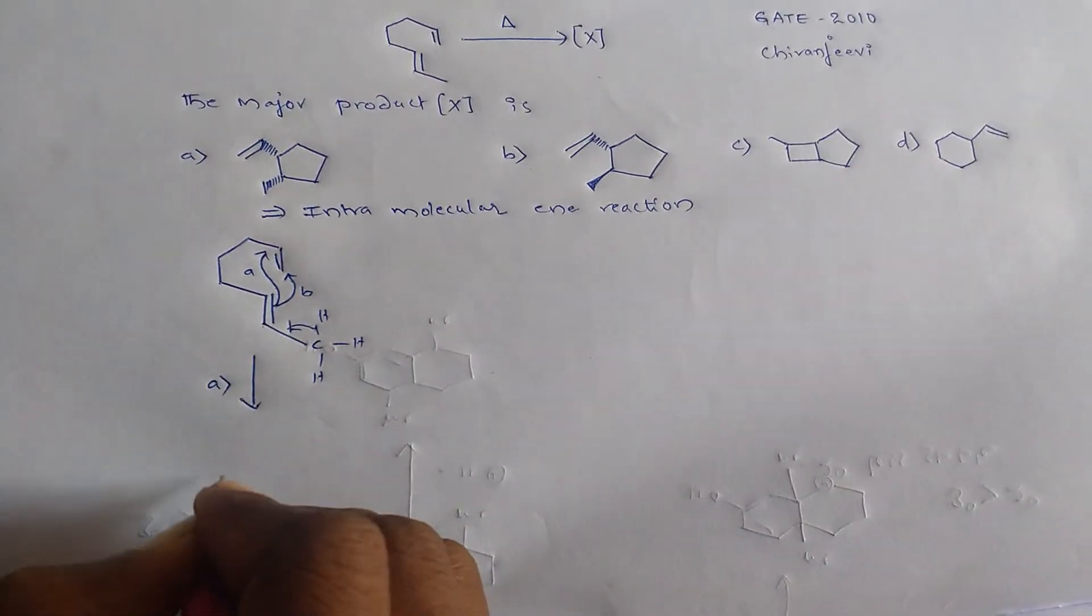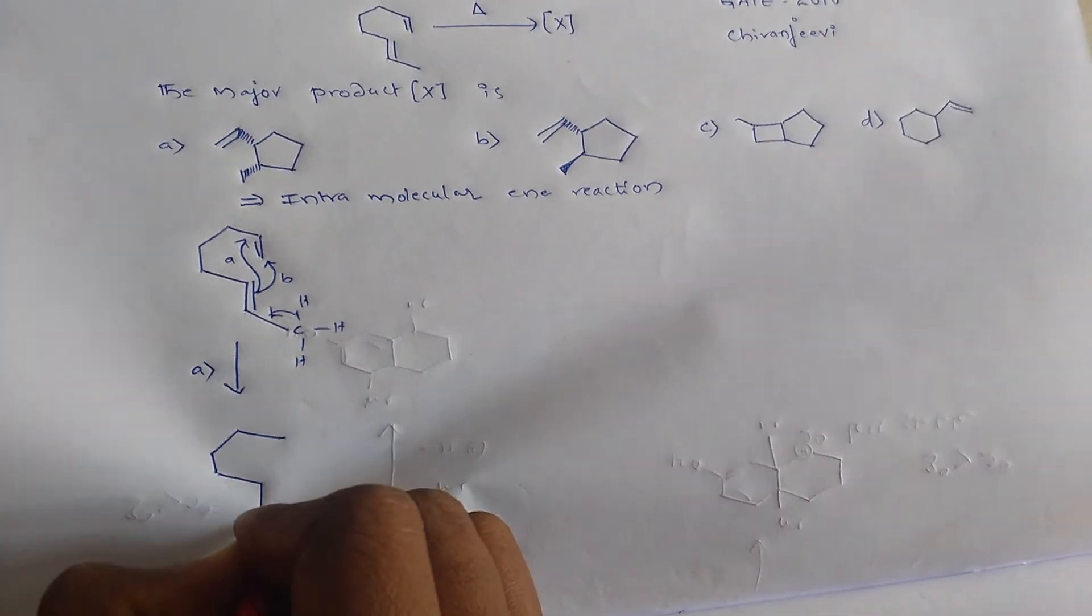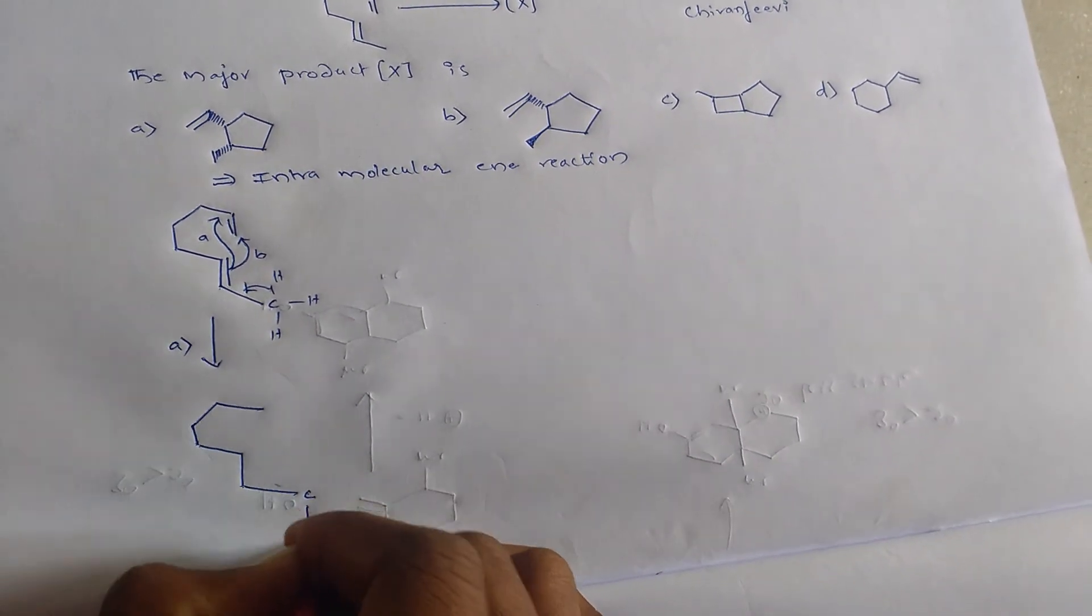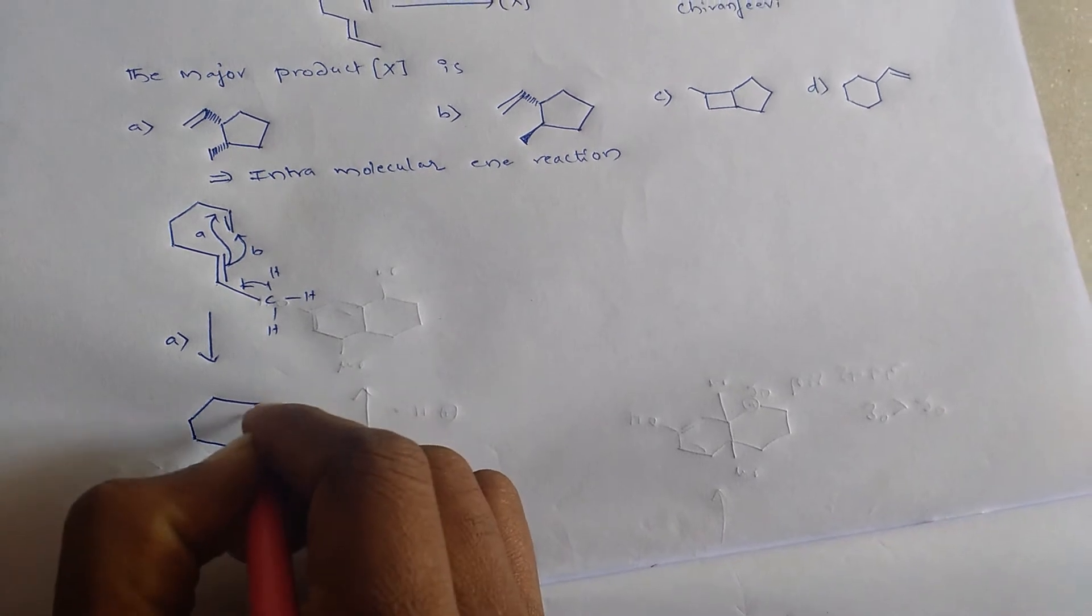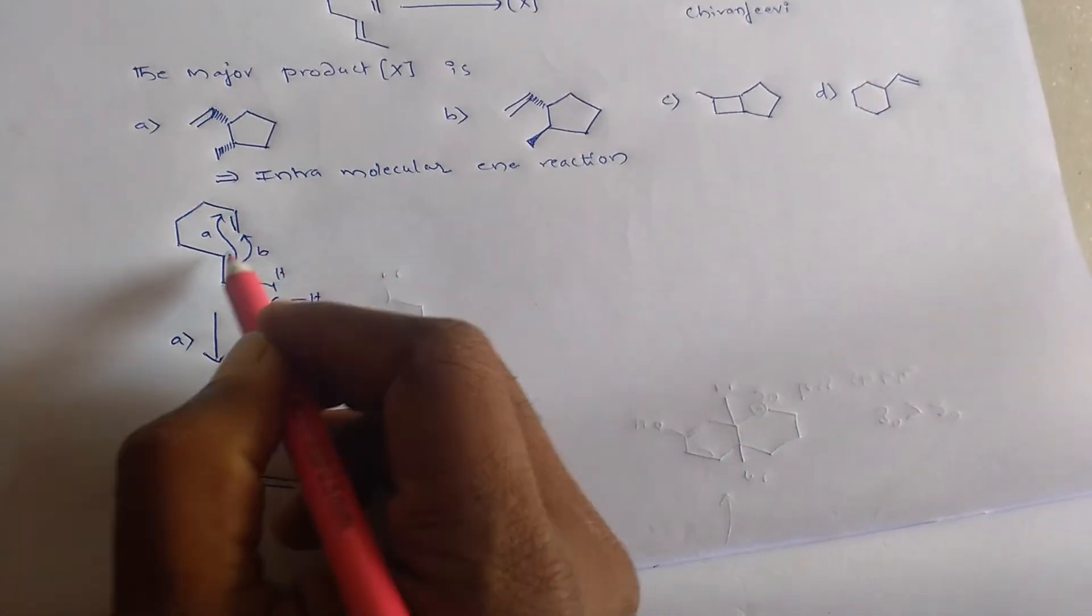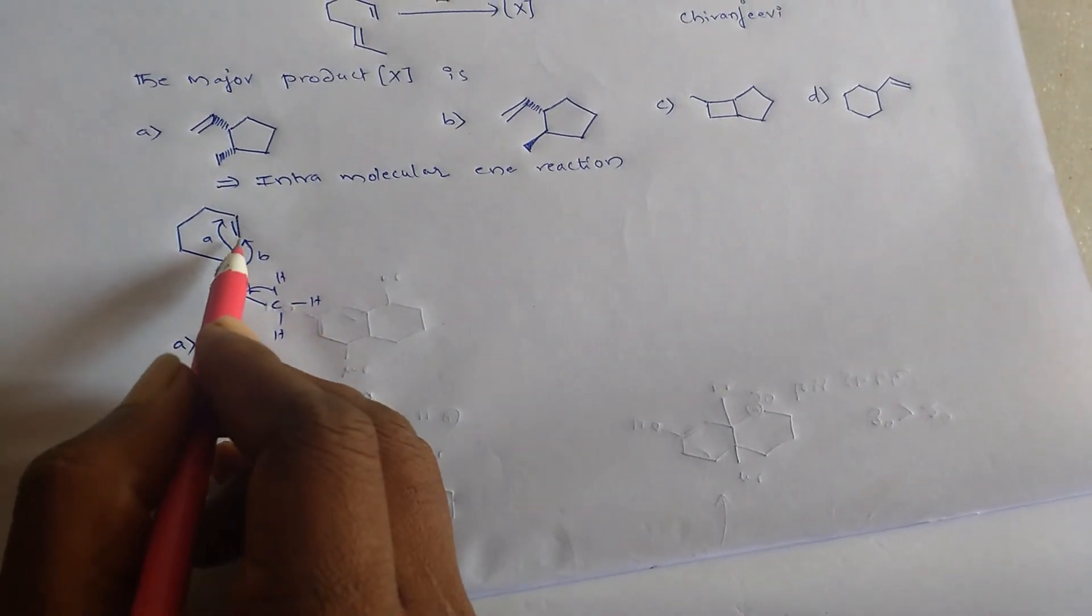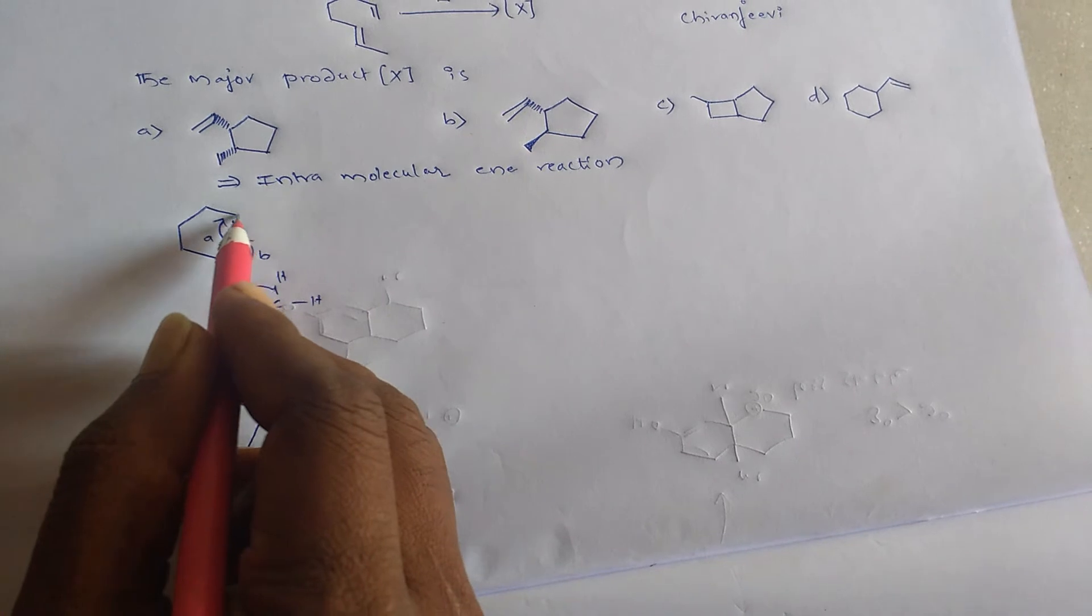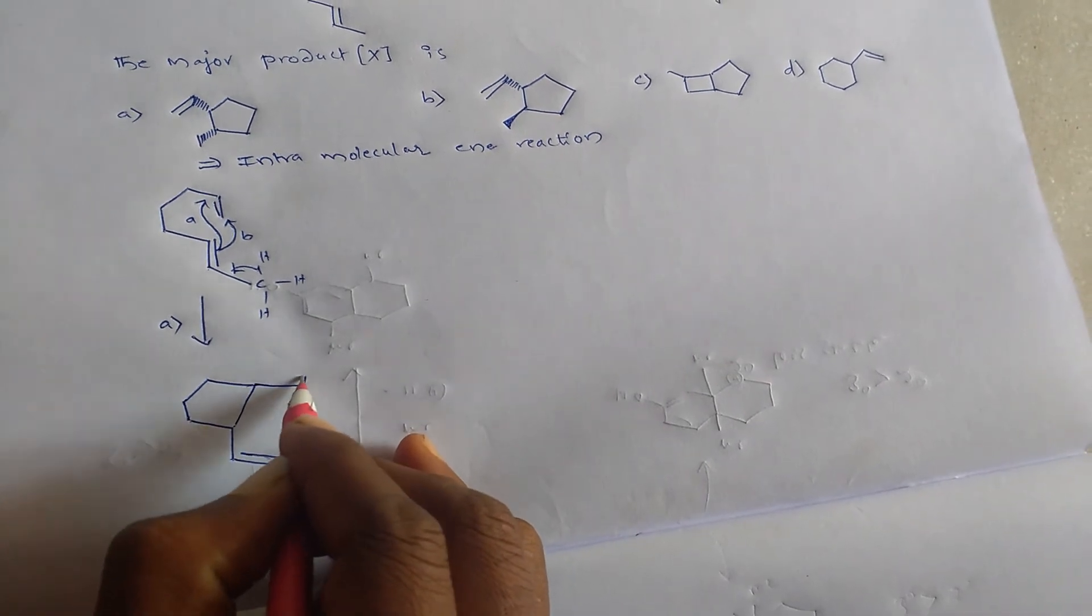So this is A. And ene reaction is only possible if these two double bonds are in same plane. If these two double bonds are not in same plane, there is no ene reaction. So these two double bonds should be in same plane. That's why these two are in same plane.